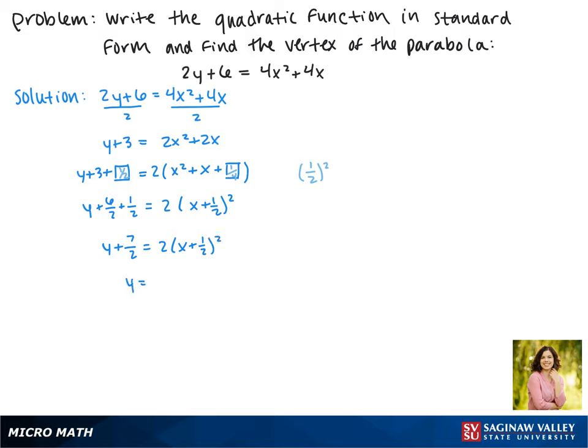Now we want to solve for y, and we get 2 times x plus 1 half squared minus 7 halves.